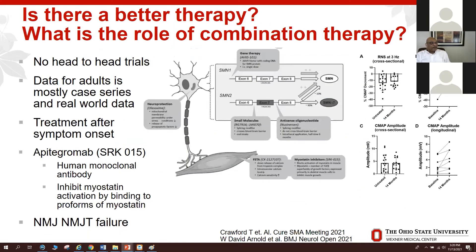Regarding whether one therapy is better than another: there are no head-to-head trials, and data for adults is mostly case series and real-world data. Decisions in the clinic are individualized based on the treatment, route of administration, and available data. The options are discussed, and consensus decisions are made with the patient.